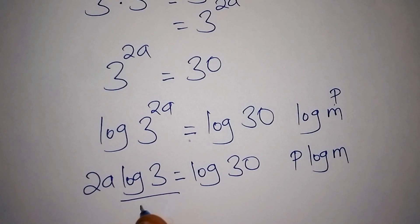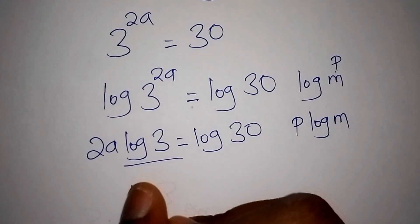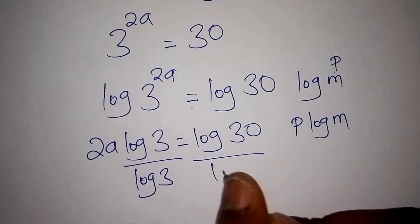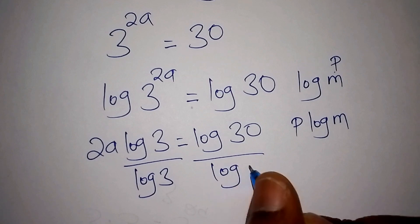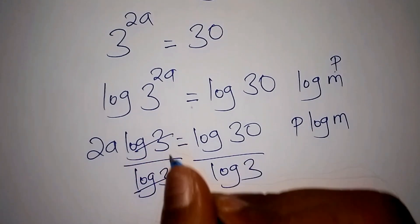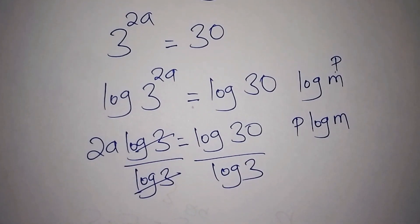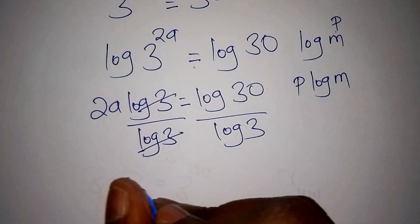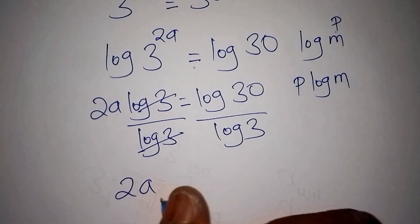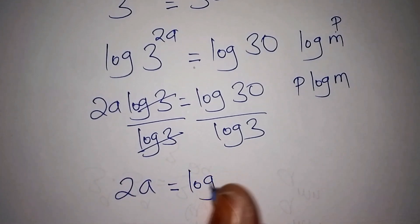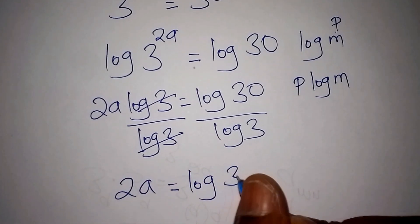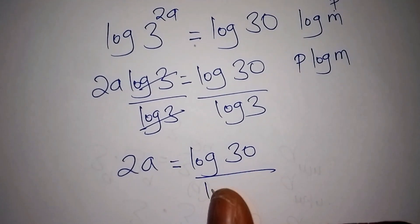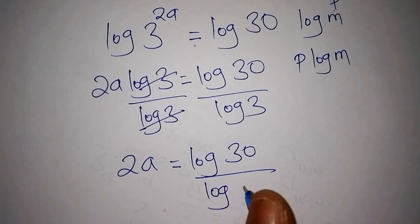From there, we divide both sides by log of 3. Log 3 and log 3 cancel, so we remain with 2A equals log of 30 over log of 3.